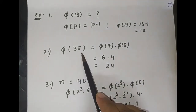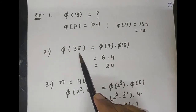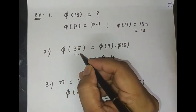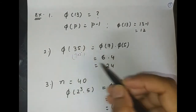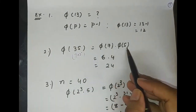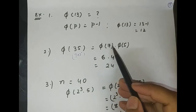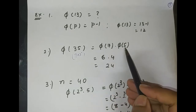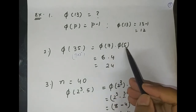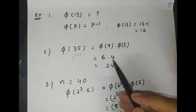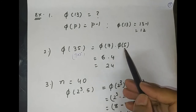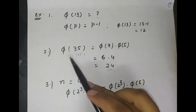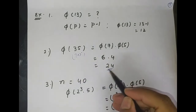Next, φ(35): we split 35 as 7 × 5. Since 7 and 5 are both prime numbers and relatively prime to each other, φ(7) = 7 − 1 = 6 and φ(5) = 5 − 1 = 4. So φ(35) = 6 × 4 = 24.